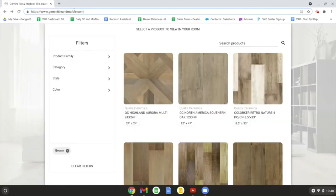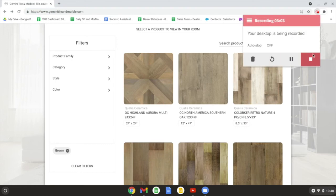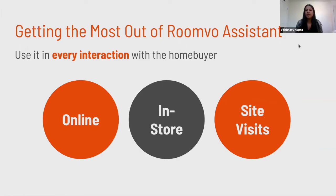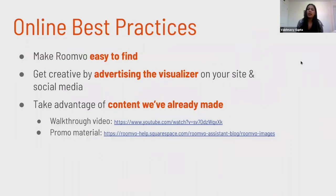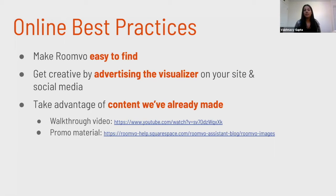Thanks Reed. As you can see, the visualizer can be used in every interaction with the home buyer — from the point they start their shopping journey online to onsite visits. Our team has prepared a list of best practices for what your retailers can do to get the most out of the RUMVO Assistant. For online best practices: make RUMVO easy to find by putting it on every single page of the retailer's website. Retailers can also get creative by advertising the visualizer on social media, and take advantage of the content we've already made, including walkthroughs, website banners, and social media posts they can directly download and upload.